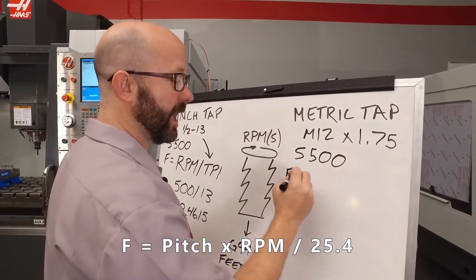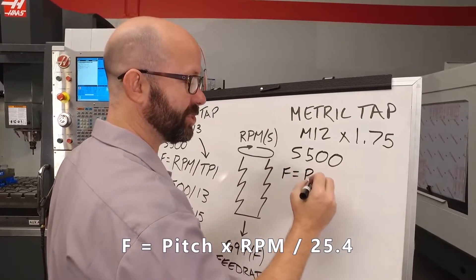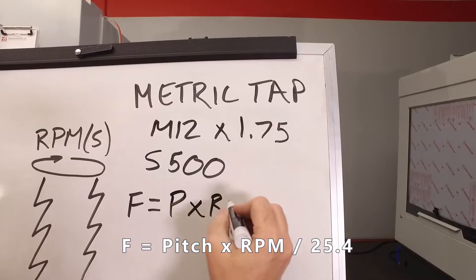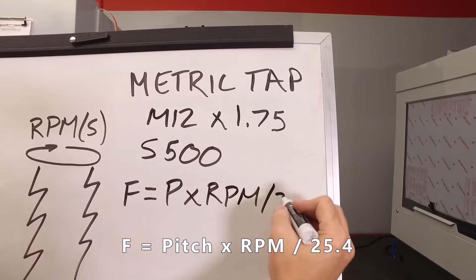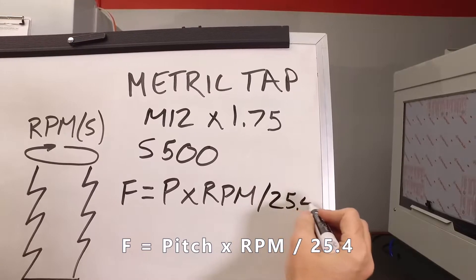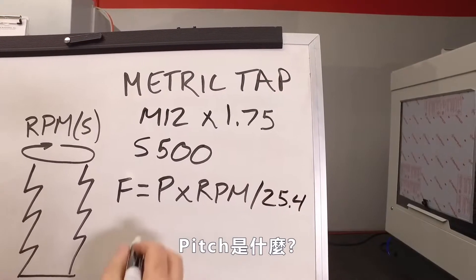We're going to use F equals pitch times RPM divided by 25.4. Now, what is pitch?